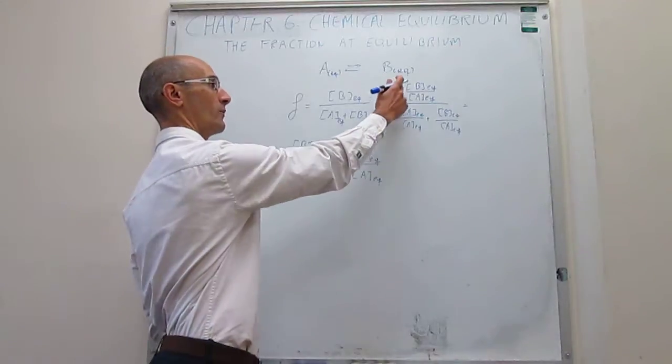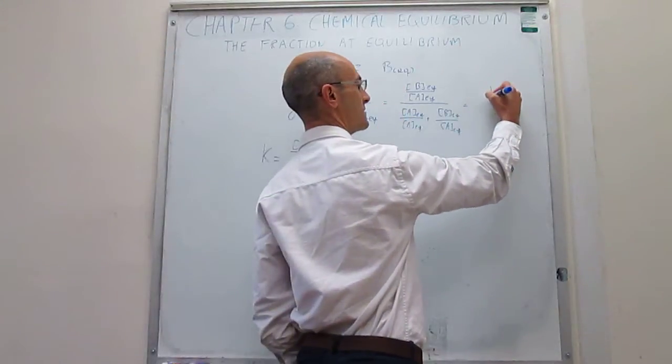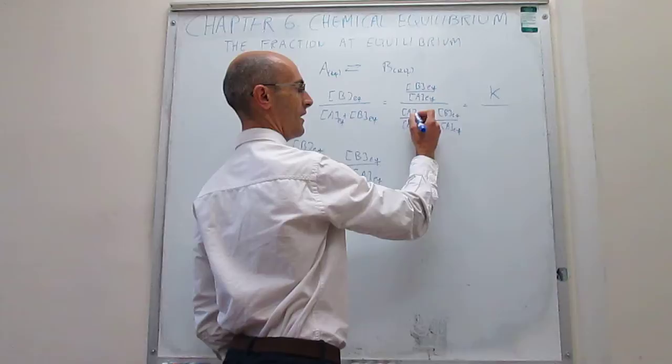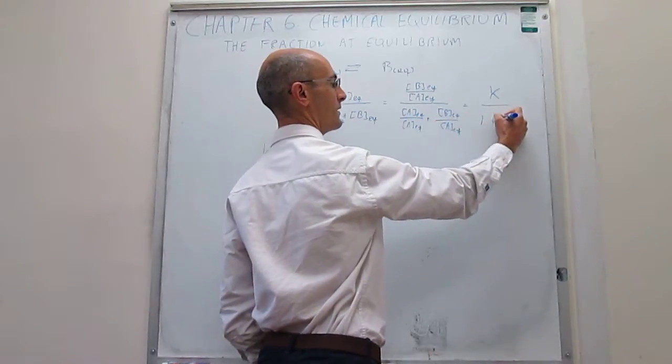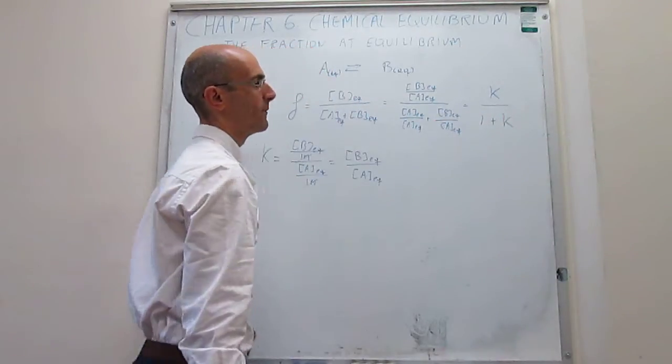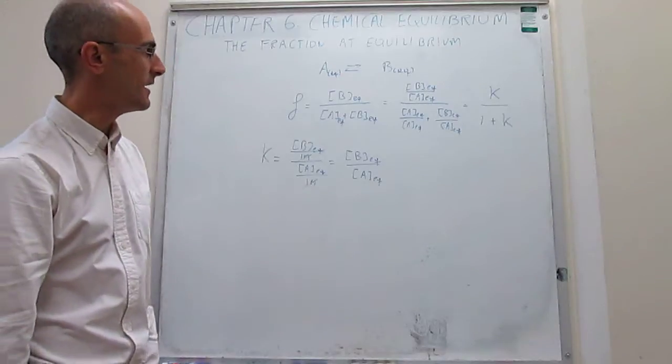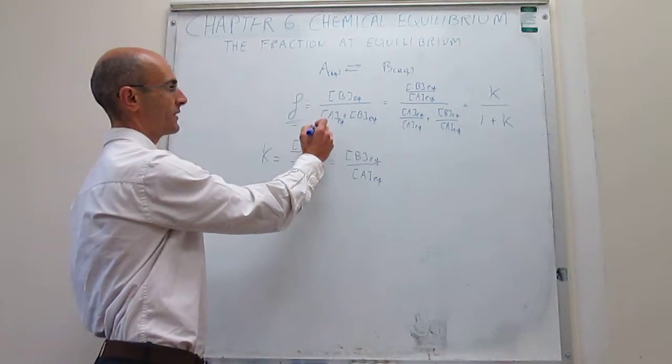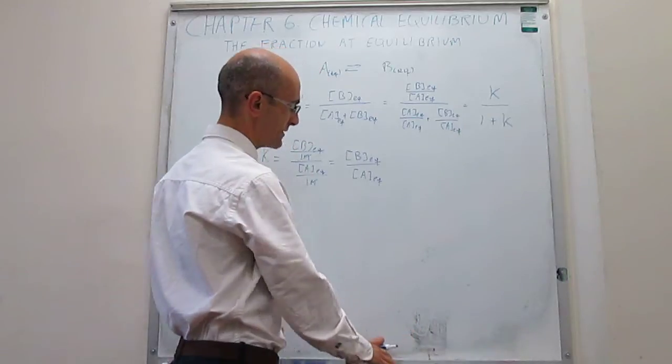We recognize that that's simply the equilibrium constant, and these two terms cancel to 1, so we get K over 1 plus K. This is the connection between the fraction of product at equilibrium and the equilibrium constant.